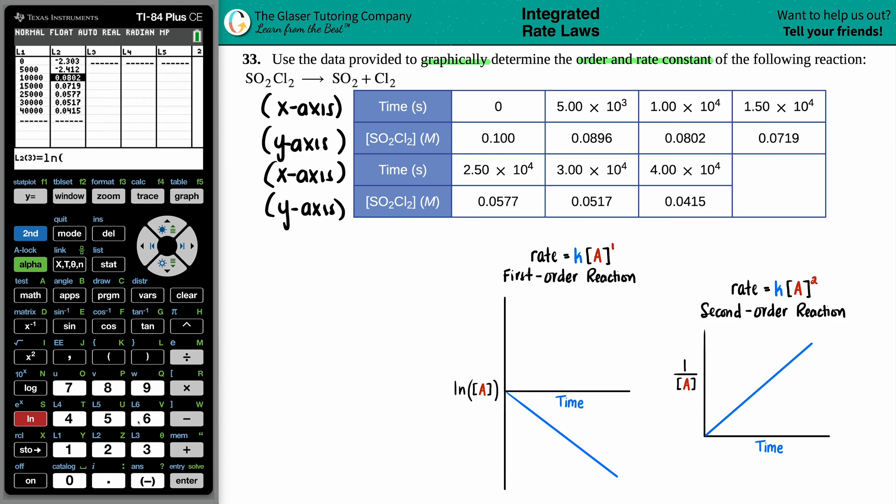So that's why I love using the TI-84 is you just have to plug in the function and it'll do the calculation for you. So now the next one would be LN of 0.0896. Close parentheses. Let it do the math for you. Beautiful. Next one, LN of 0.0802. That looks good to me. Next one, LN of 0.0719. Are we having fun? LN 0.0577. Close it up. LN of 0.0517. Close it up. LN of 0.0415. Close it up. Press enter. Now let's look at that graph.